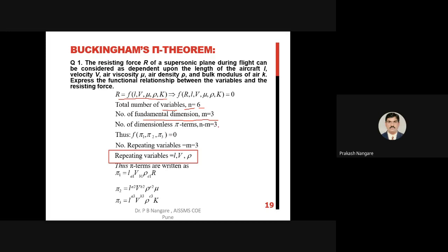Three Pi terms need to be found. As per the conditions for selecting repeating variables — geometric, flow, and fluid properties — the repeating variables are identified as l, v, and rho. Therefore, Pi one is written in terms of the repeating variables as l^a1 · v^b1 · rho^c1 · R, where R is the non-repeating parameter for the first Pi term.